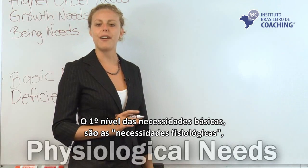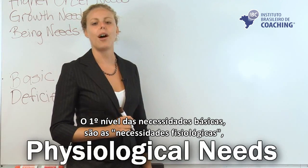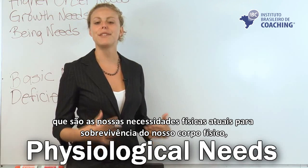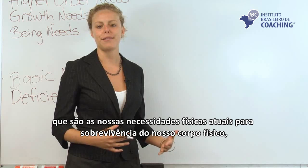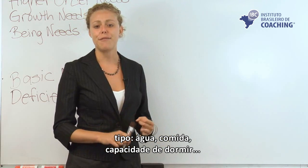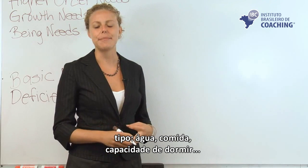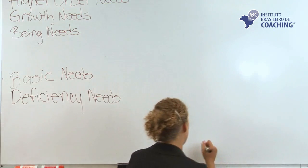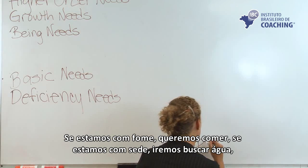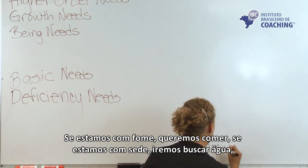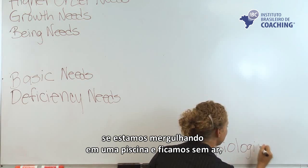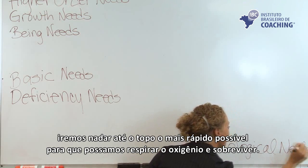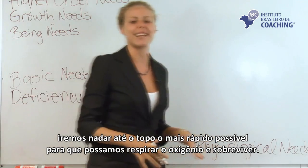The first level of the very most basic needs are our physiological needs — the actual physical needs of our body to survive. That's water, food, and sleep. It's really easy to see that all of us are motivated by those needs. If we're hungry, we want to eat. If we're thirsty, we'll look for water. If we're swimming in a pool and run out of air, we're going to swim to the top as quickly as we possibly can to get oxygen and survive.